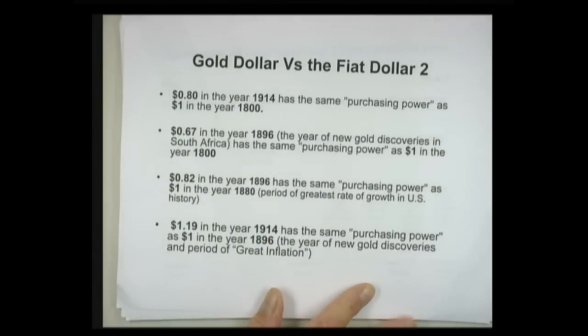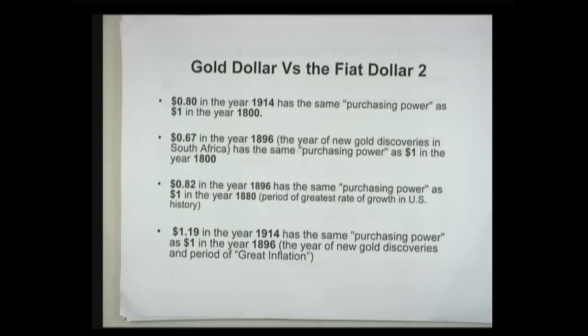Let me jump right to the performance of the classical gold standard, which could involve a central bank or not — in the U.S. it didn't, in Great Britain and other countries it did. Taking the U.S.: 80 cents in 1914 had the same purchasing power as a dollar in 1800. In other words, prices declined gently over time by a cumulative amount of 20 percent. We actually had a gentle secular deflation over that period.